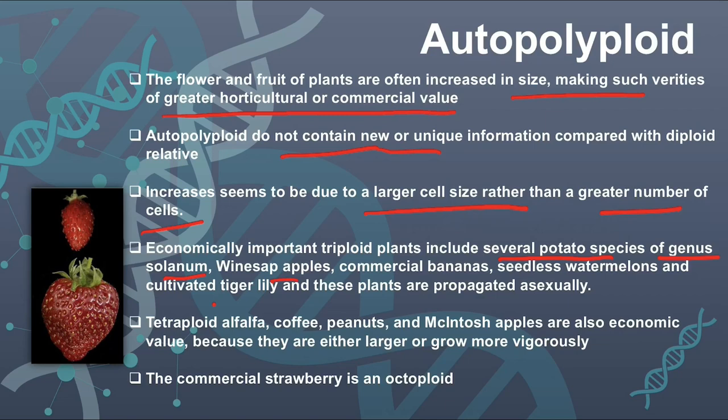Wild variety bananas are not edible and have many seeds. Similarly, the seedless watermelon varieties we eat also lack seeds. Cultivated tiger lily and these plants are propagated asexually. This covers triploid examples.